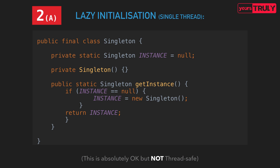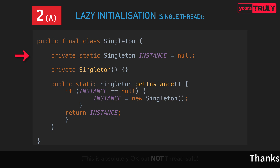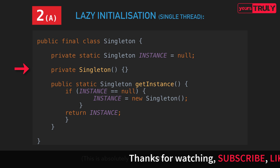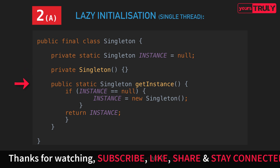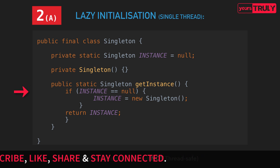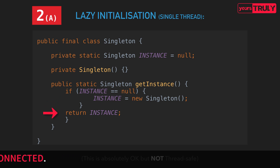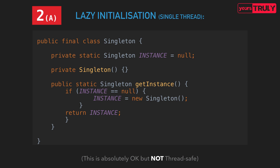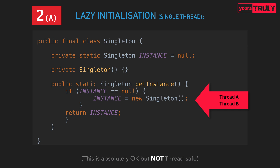Lazy initialization is appropriate for single-threaded applications and not for multi-threaded ones. Here I've created a Singleton class, initially setting the instance to null, the constructor to private, and a globally accessible get instance method. Inside that method, there's an if check — if the instance is null, a new instance is created and returned. This is not thread safe because if two or more threads concurrently access get instance and the instance is not yet initialized, both threads will see it as null, a race condition occurs, and both will create a new instance.